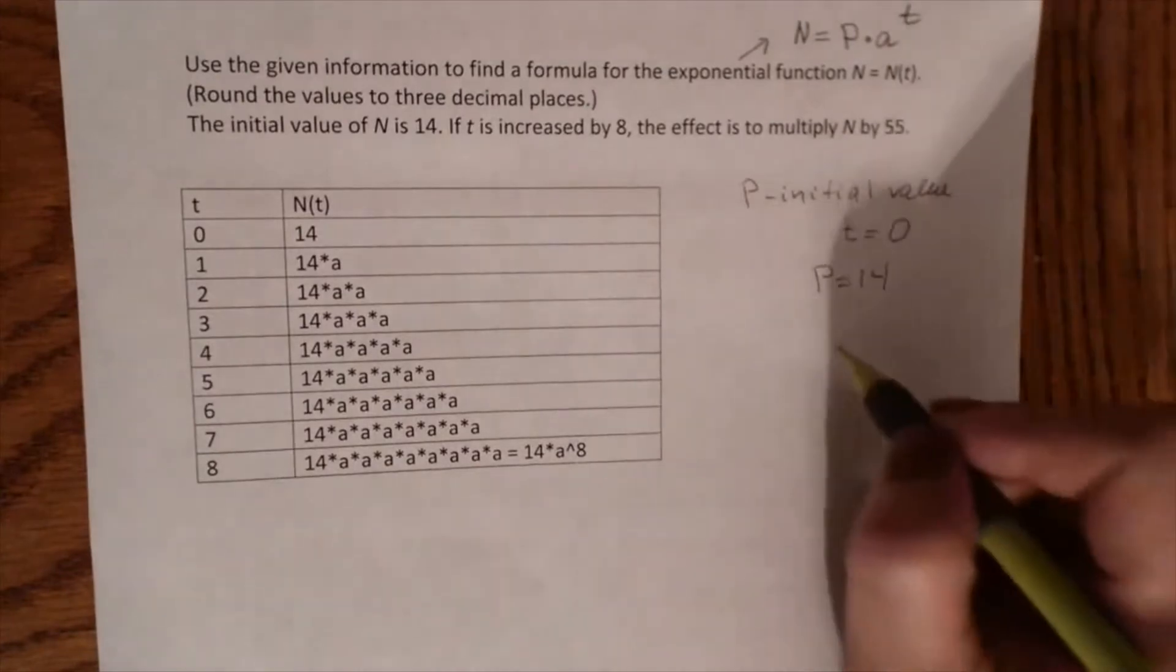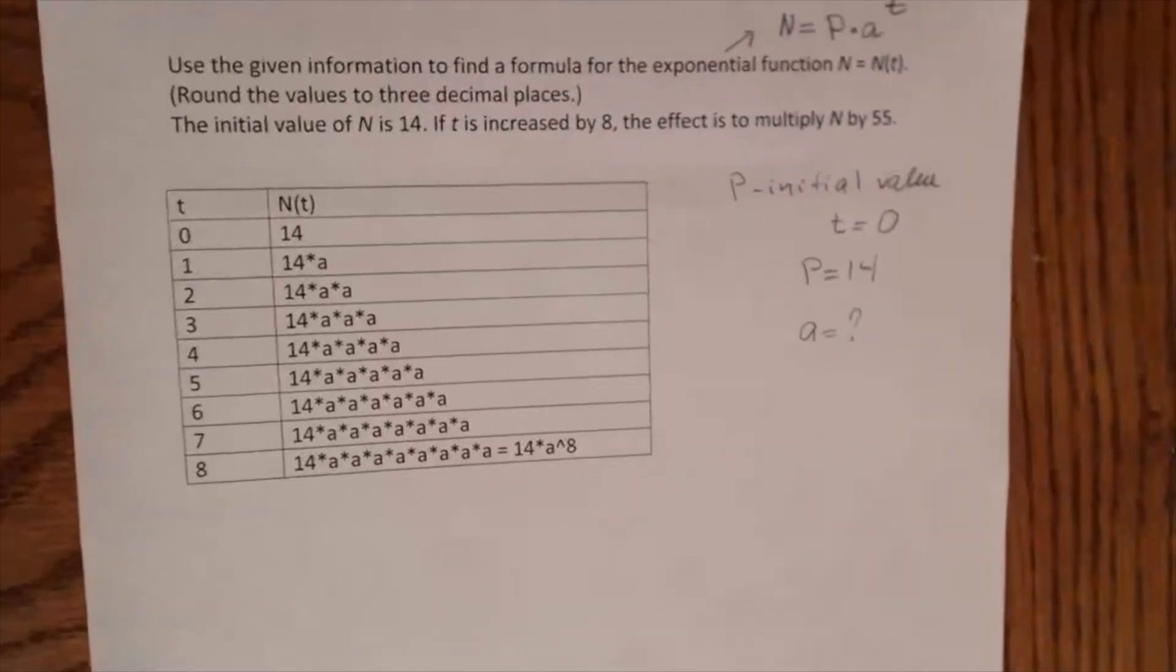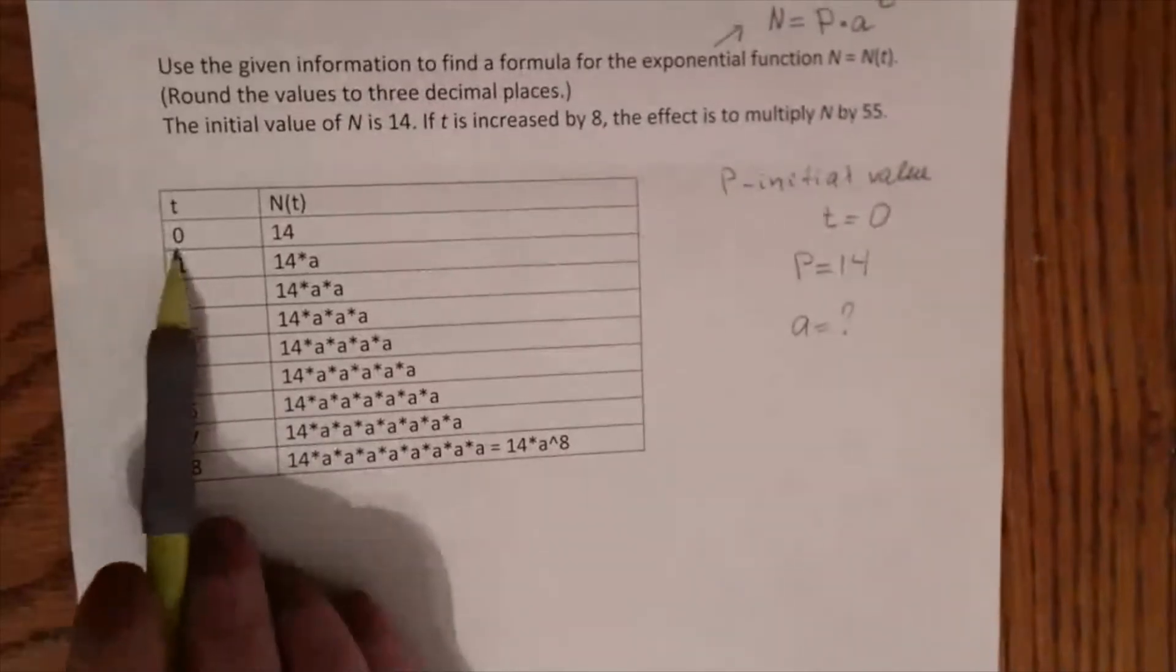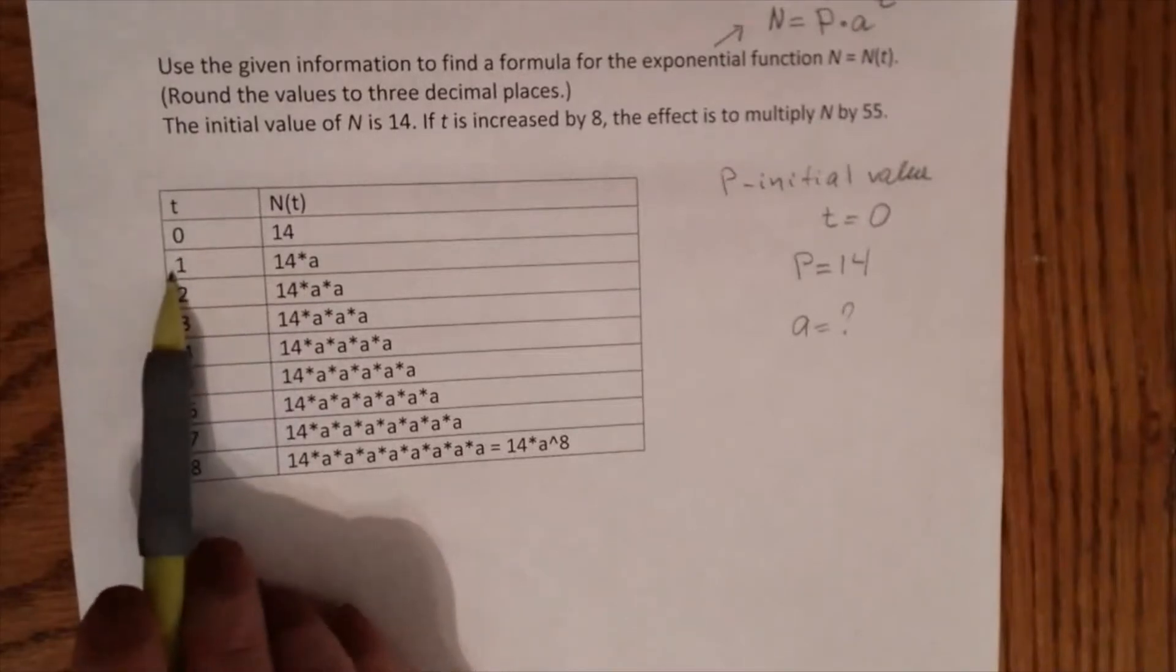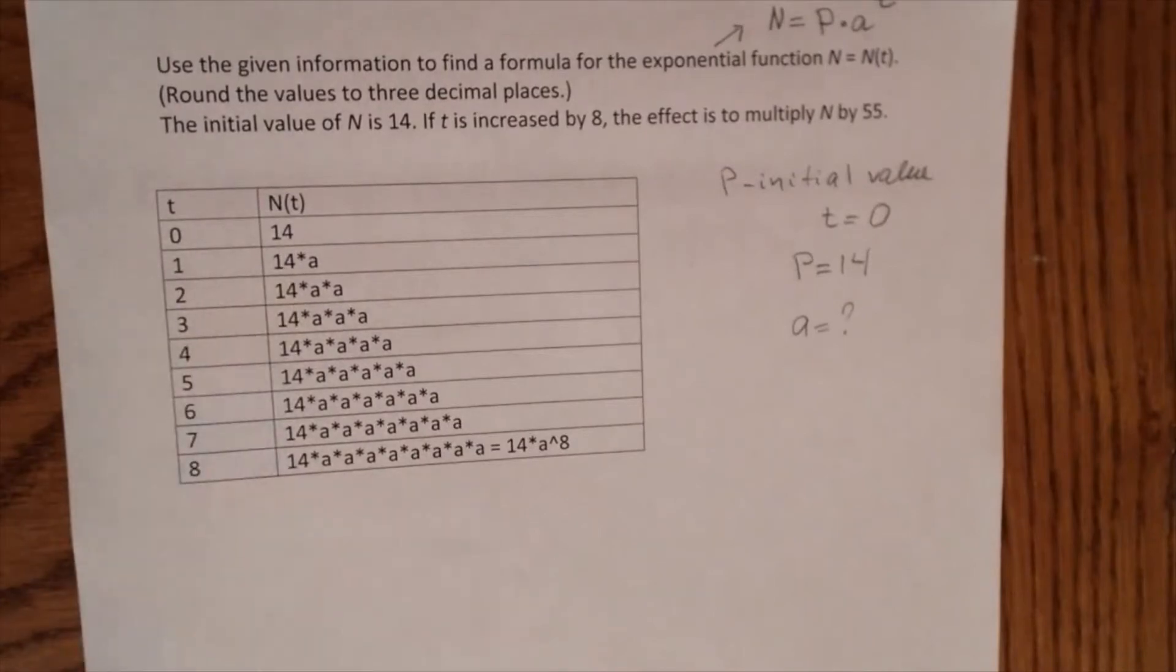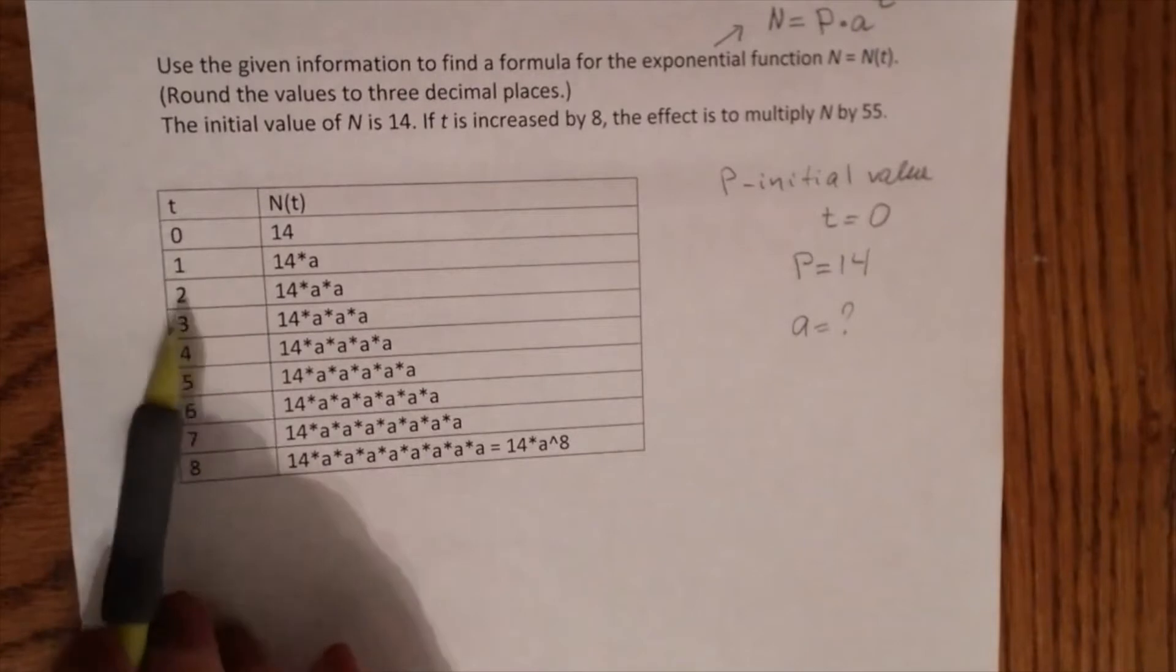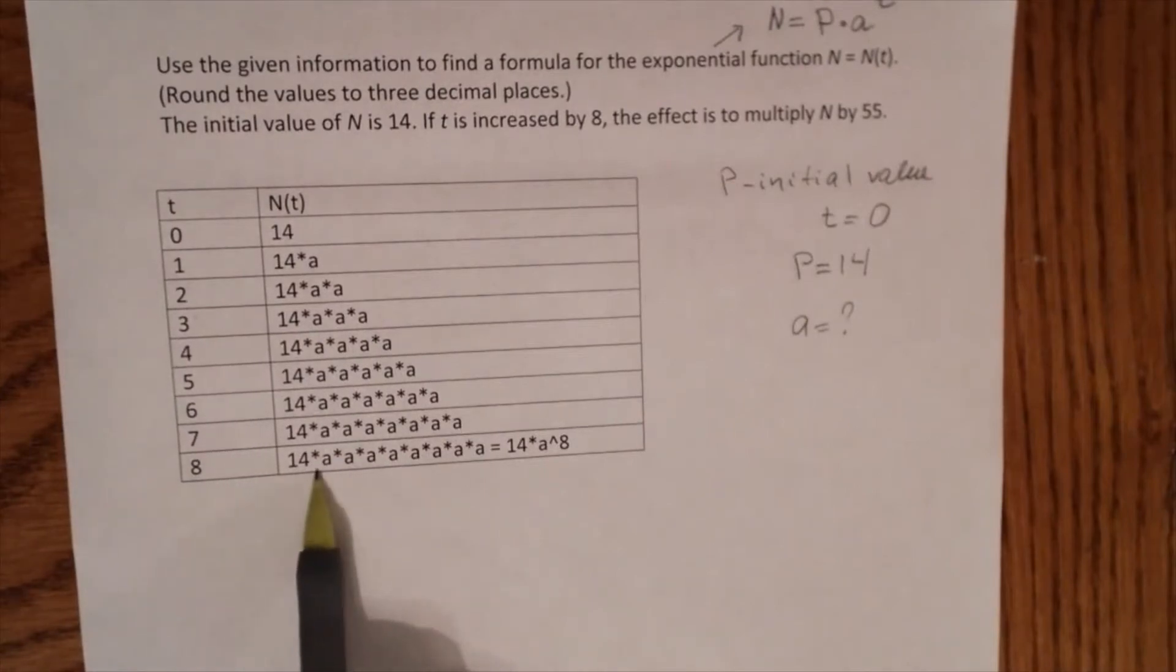We need to find a. To find a, let's look at the table. When t equals 0, N(t) equals 14. When t equals 1, we have to multiply 14 by a. And each step, we have to multiply by a. So when t equals 8, it will be 14 times a to the 8th power.